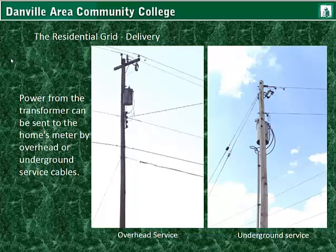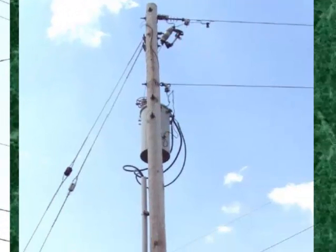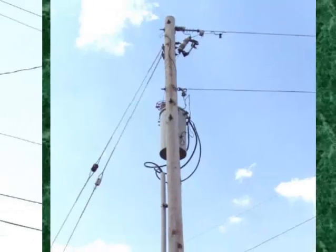The residential grid delivery. Power from the transformer can be sent to the home's meter by overhead or underground service cables. We have the higher voltage distribution lines, the transformer, and an overhead service cable that would go down to the home. With underground service, we have the high voltage lines, the transformer, and the service cables going down conduit, traveling underground towards the home.